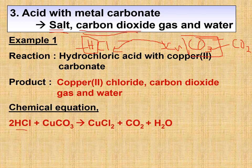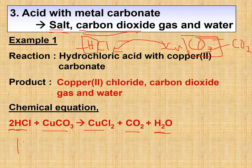Writing the equation: HCl + CuCO₃ → CuCl₂ + CO₂ + H₂O. Copper chloride is CuCl₂ because Cu is 2⁺ and Cl is 1⁻. Don't write the formula incorrectly — you cannot write H₂Cl; you can only change the coefficient in front. We call that the stoichiometric number.